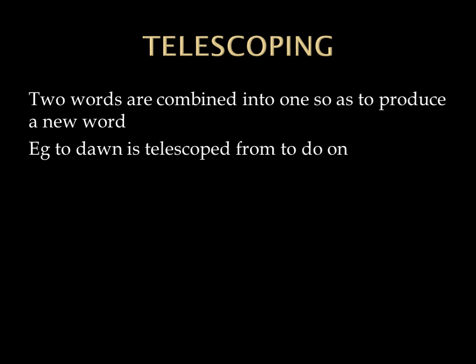The next method is telescoping. Telescoping is another process by which the vocabulary has been enlarged. Two words are combined into one so as to produce a new word. For example, to don is telescoped from to do on or to put on. In such cases, two words come together to form a new word, perhaps because of faster or more rapid pronunciation.